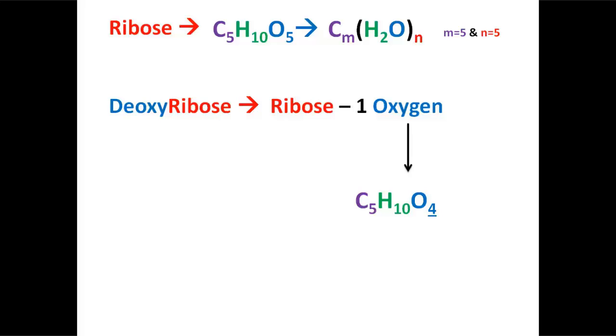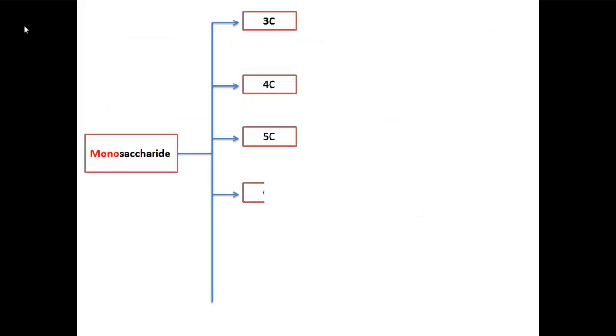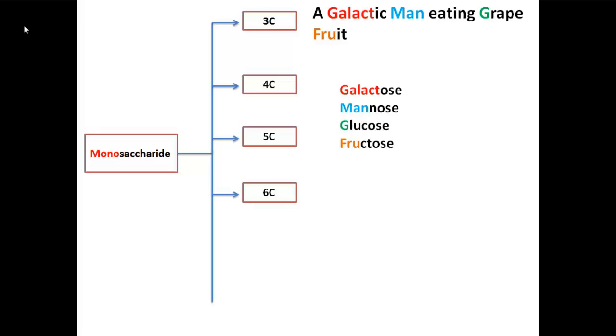Now let's jump to our favorite and sexy sugars, the hexoses. These are the most common saccharides. A great mnemonic to remember them is by imaging a galactic man eating grapefruit: galactic is for galactose, man is for mannose, grape is for glucose since grape is very sweet, and fruit is of course for fructose. Since these are maybe the most common sugars you'll see in biology and biochemistry, let's just explore their open and ring structure.